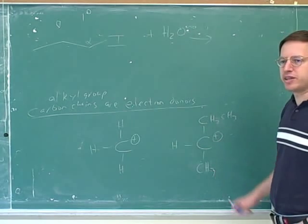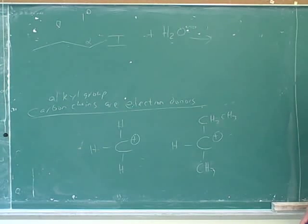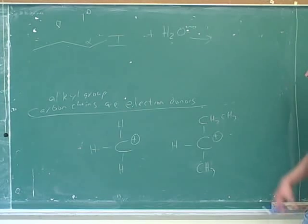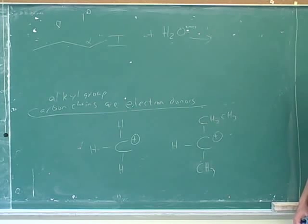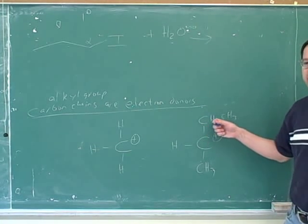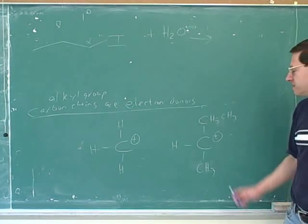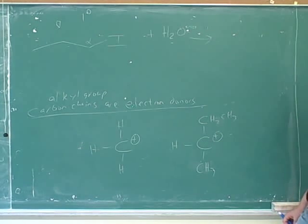Another way to describe the difference between carbocations is: the one with more alkyl groups is more substituted. If you've got more alkyl groups, an organic chemistry professor would say you're more substituted. Substitution stabilizes carbocations — more accurately, substitution with alkyl groups stabilizes carbocations, but people usually shorten it and say substitution stabilizes carbocations, with the understanding that alkyl groups are what we're substituting with.